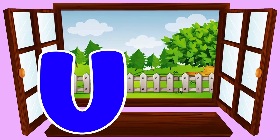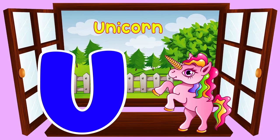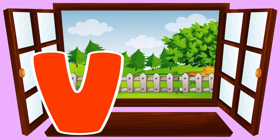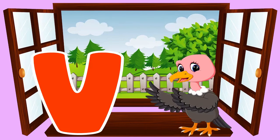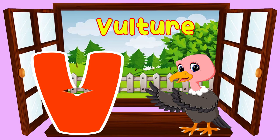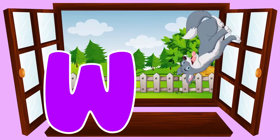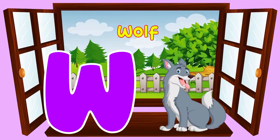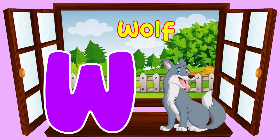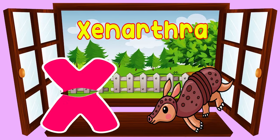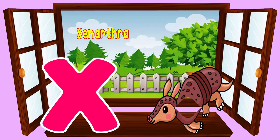U is for unicorn. u, unicorn. V is for vulture. v, vulture. W is for wolf. w, wolf. X is for xenarthra. x, xenarthra.